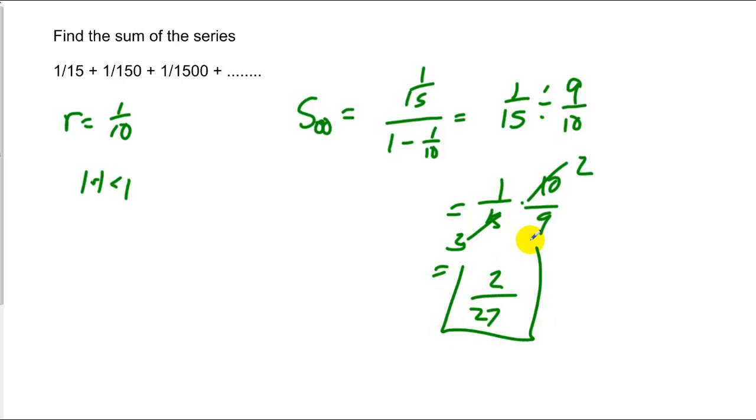And if I add these numbers forever and ever, this will approach, it won't quite actually get there but it's close enough. It's never going to go over two over twenty-seven.